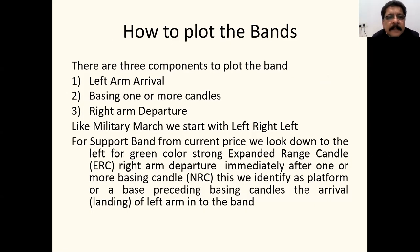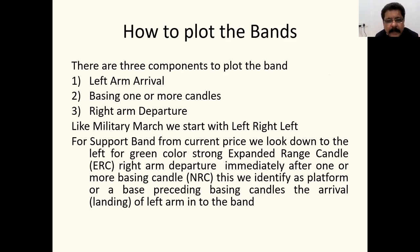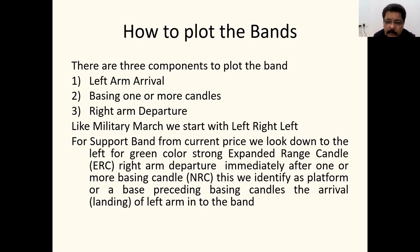To plot bands there are three components: the left arm (arrival), basing of one or more candles — not more than three or four — and the right arm (departure). Like a military march-past we start with left, right, left. For a support band from the current price, look down to the left for a green strong ERC, then one or more basing narrow range candles, then the right arm departure immediately after. We identify this as a platform or base or airport for the plane to land and take off again.